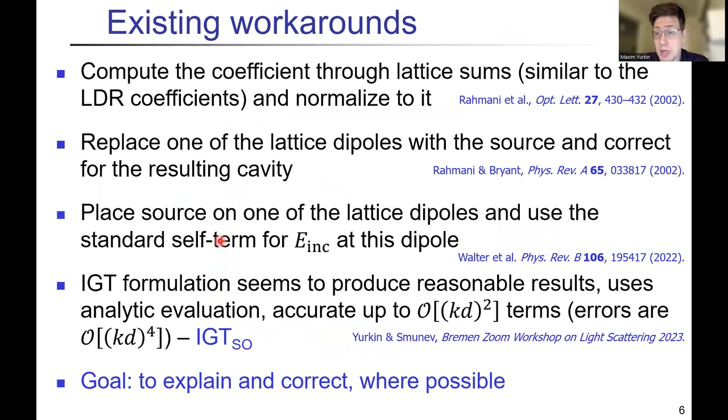Actually, in the literature, people have seen similar problems and have devised some solutions or workarounds. Mostly they are related to computation of some correction factors, which can be used afterwards. First we compute some wrong result, but then we can correct it by normalizing to some coefficient, usually determined through lattice sums. Also recently at the Bremen conference, I showed that IGT formulation can produce some meaningful results. The goal is to explain what we can and can't do with sources inside the particle.